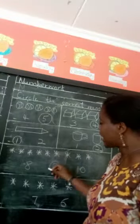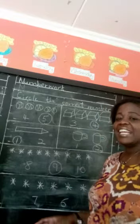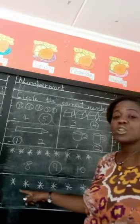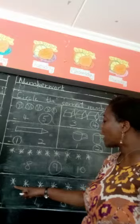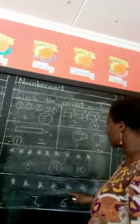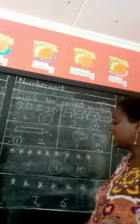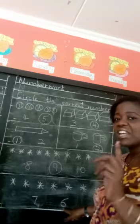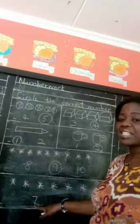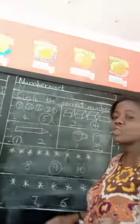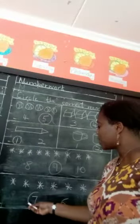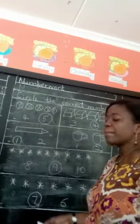Let's count the last set of twinkle twinkle little stars. One, two, three, four, five, six, seven. Is this number seven? No. Is this number seven? Yes. So what do we do? We circle number seven using a pencil.